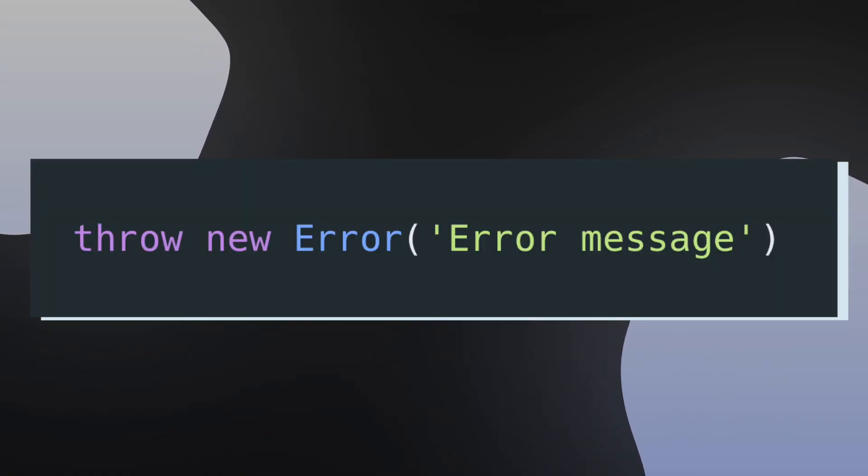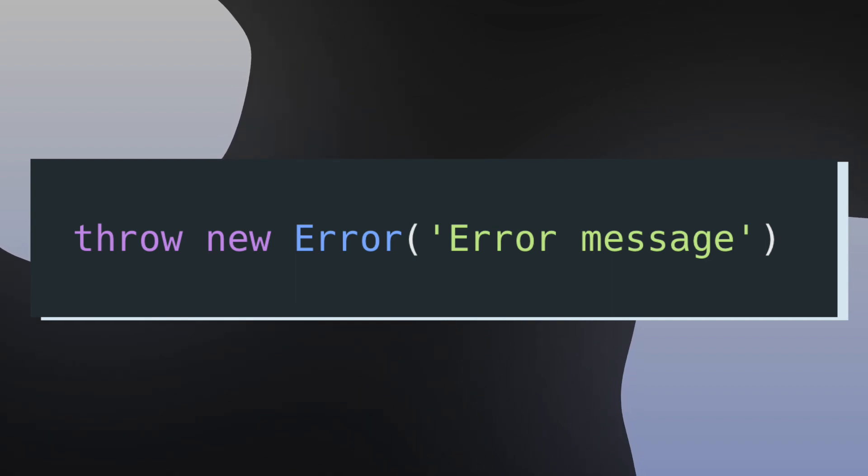Now we know how to catch errors, but what about throwing errors? The syntax for throwing errors isn't too complicated — we have the reserved keyword throw and then we throw an actual error object. In this example we have throw new Error and inside of the error constructor I pass in my error message. If you call this line at any point in your application code, it's either your application's responsibility or the consumer of your application's responsibility to catch that error and handle it appropriately.